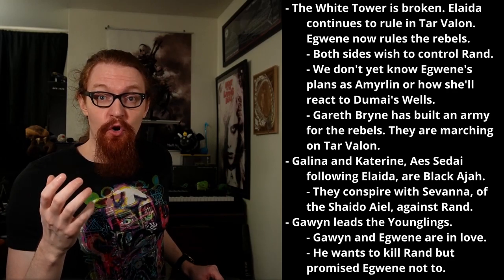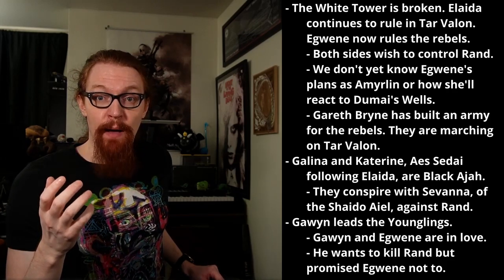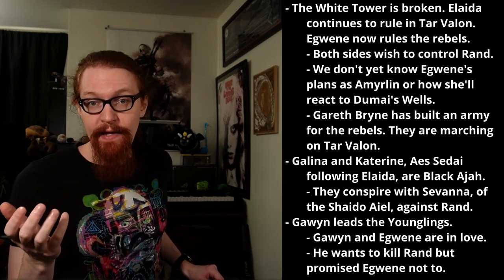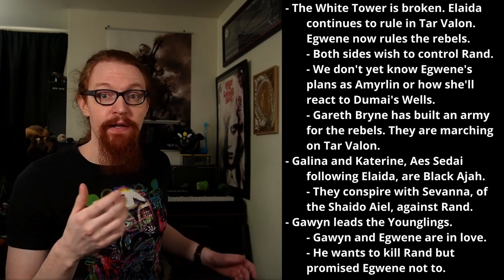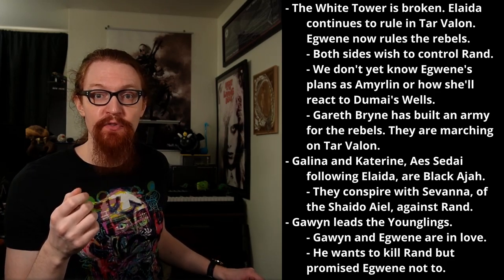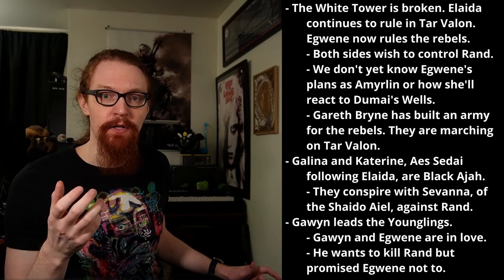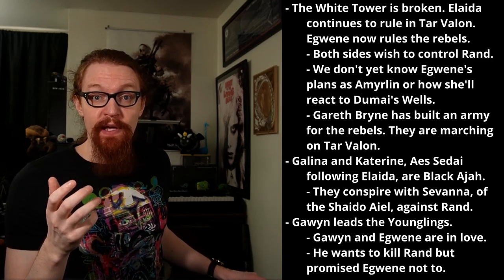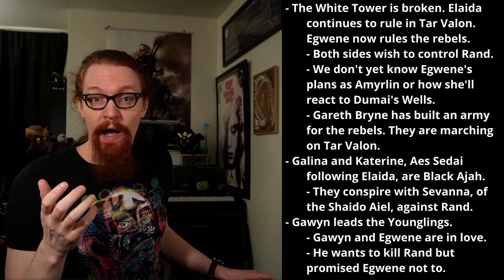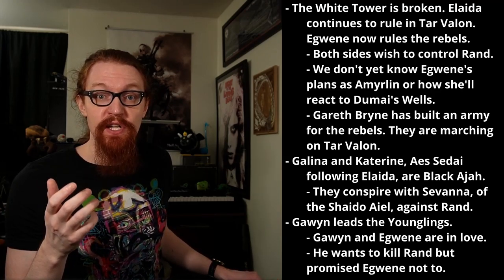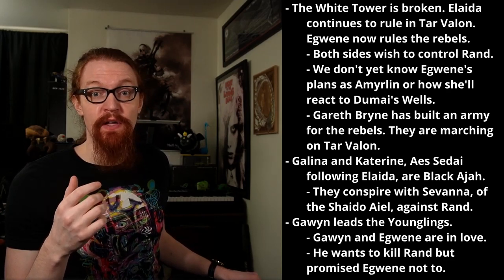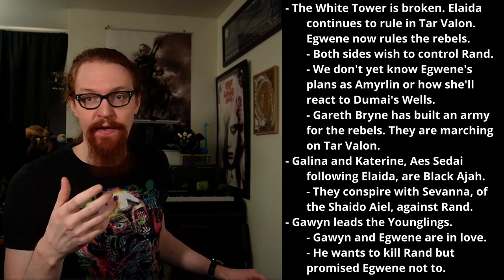The White Tower is broken. Elaida continues to rule in Tar Valon while most of the Aes Sedai we're familiar with build power in Salidar. Both sides wish to control Rand. Elaida aims to make Rand a puppet with no agency of his own. Those in Salidar are torn, with some wanting more of an alliance and others wanting the same as Elaida. Their differences aren't so much ethical as practical. We don't yet know what Egwene's approach will be as Amyrlin.